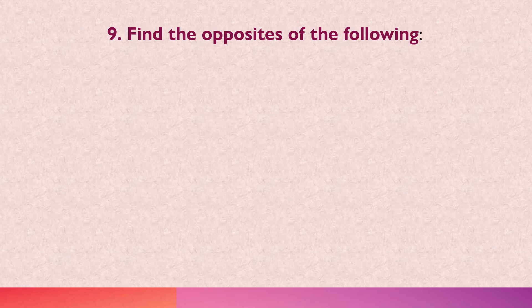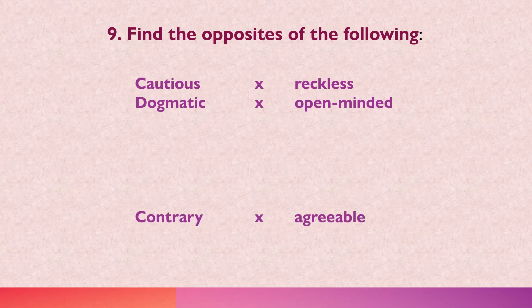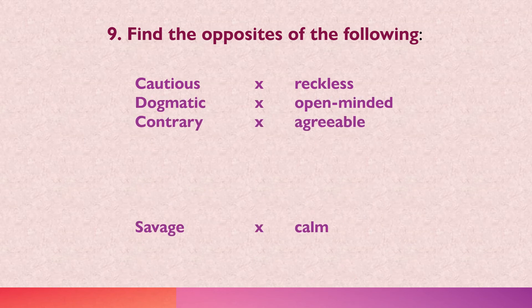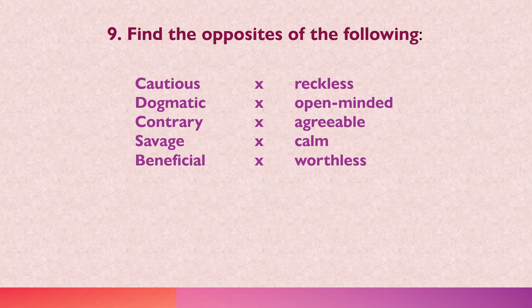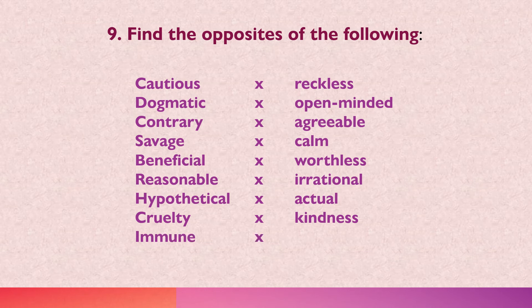The opposites of the following words: cautious — reckless; dogmatic — open-minded; contrary — agreeable; savage — calm; beneficial — worthless; reasonable — irrational; hypothetical, meaning something you are just thinking about that is not really there — opposite is actual; cruelty — kindness; immune — prone to.